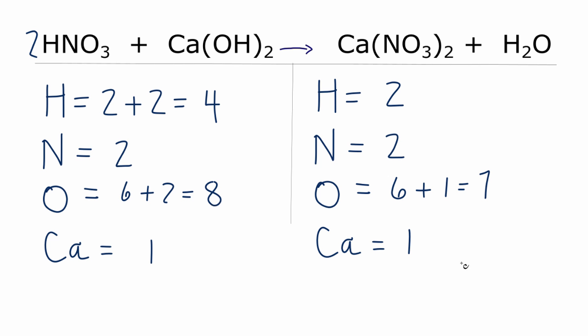Over on this side, why don't we try to fix the hydrogens? We have four here and two here, so we could just put a two in front of the H2O and then update the H's and the O's. So now I have two times two, four hydrogens. Those are balanced.